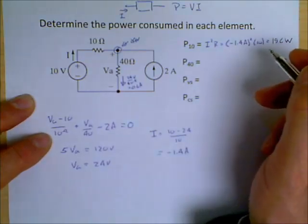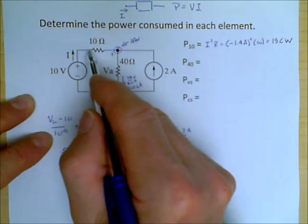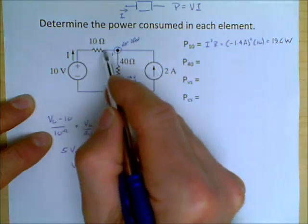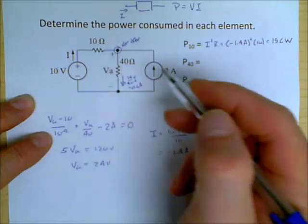As we know, resistors, the only thing they can do is dissipate power, and so therefore the power that's consumed in this resistor is 19.6 watts.